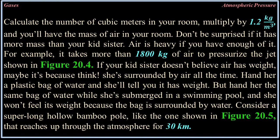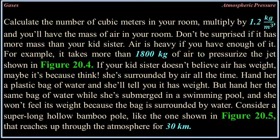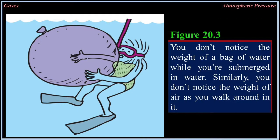Calculate the number of cubic meters in your room, multiply by 1.2 kilograms per cubic meter, and you'll have the mass of air in your room. Don't be surprised if it has more mass than your kid sister — air is heavy if you have enough of it. For example, it takes more than 1,800 kilograms of air to pressurize the jet shown in figure 20.4. If your kid sister doesn't believe air has weight, think: she's surrounded by air all the time. Hand her a plastic bag of water and she'll tell you it has weight.